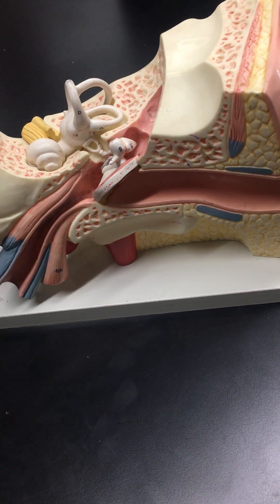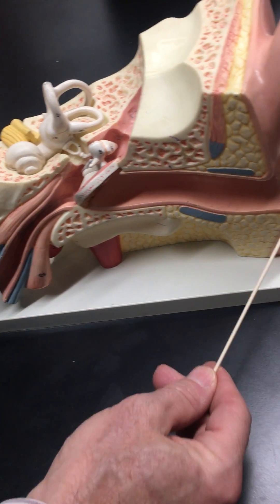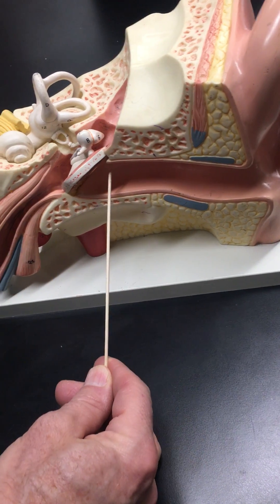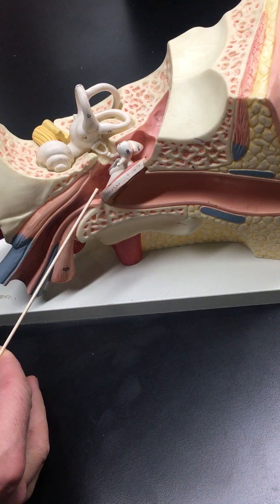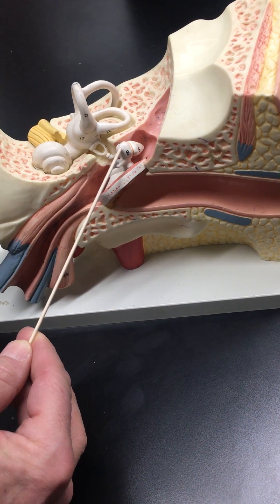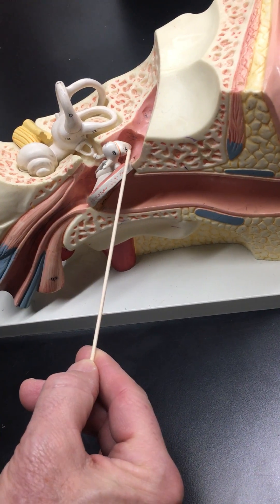Okay, close-up version of the ear. External acoustic meatus, tympanic membrane, malleus, incus.